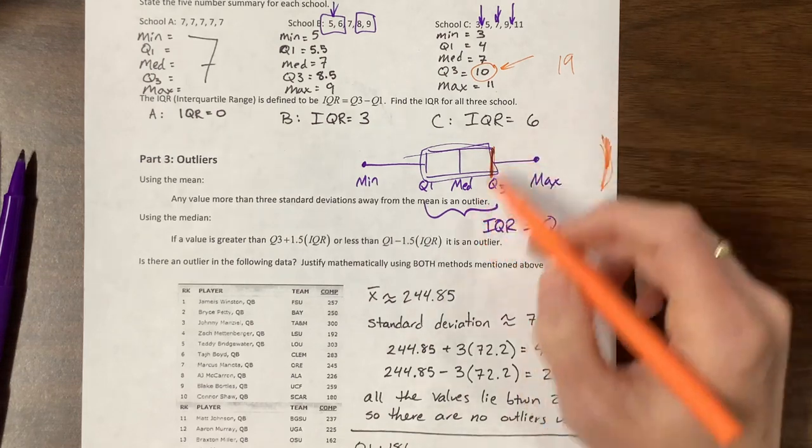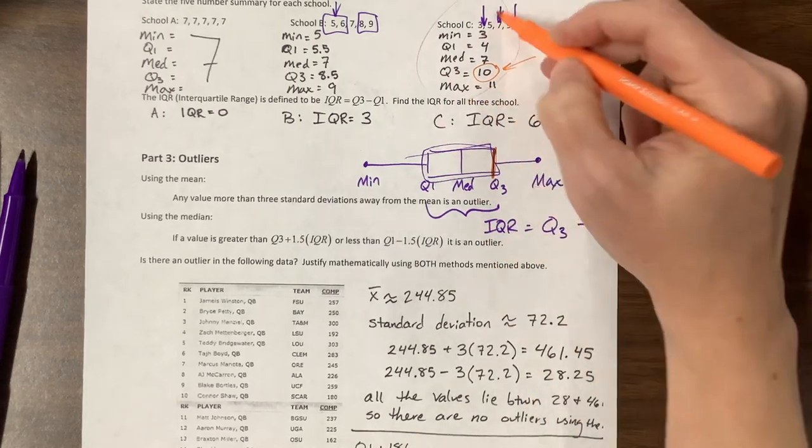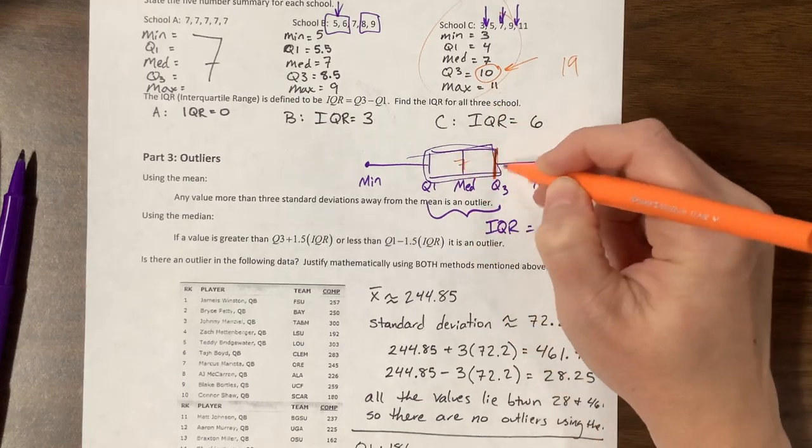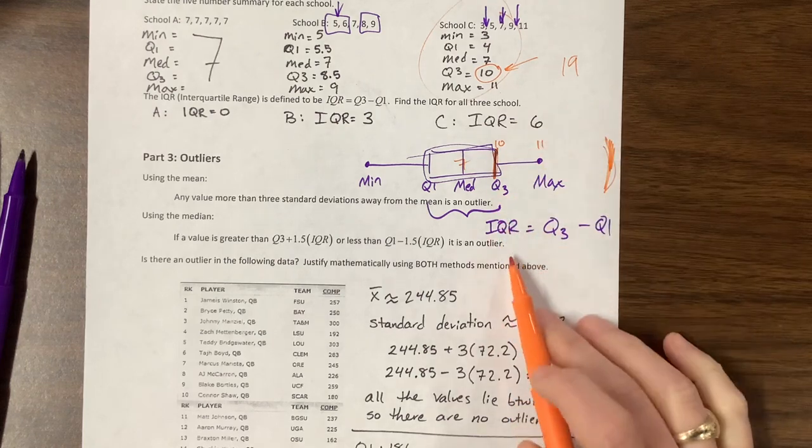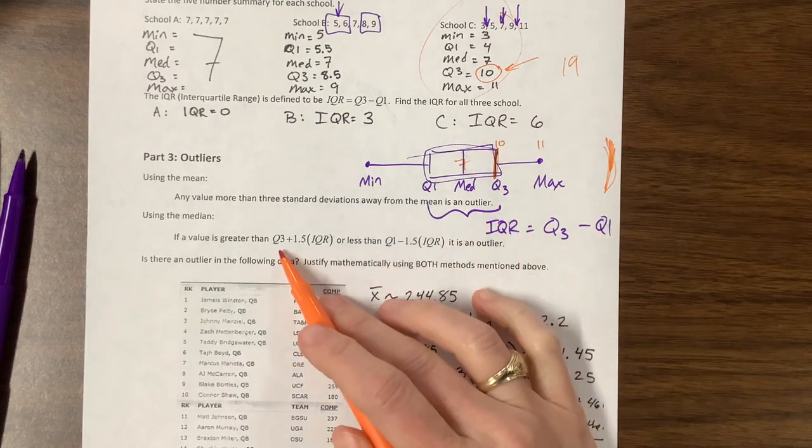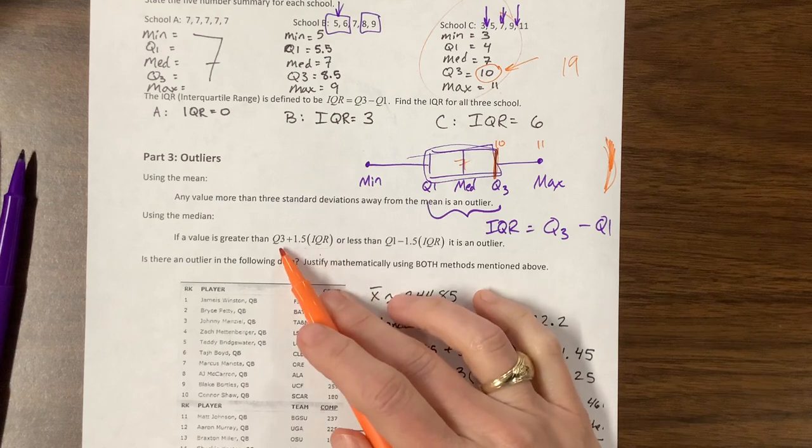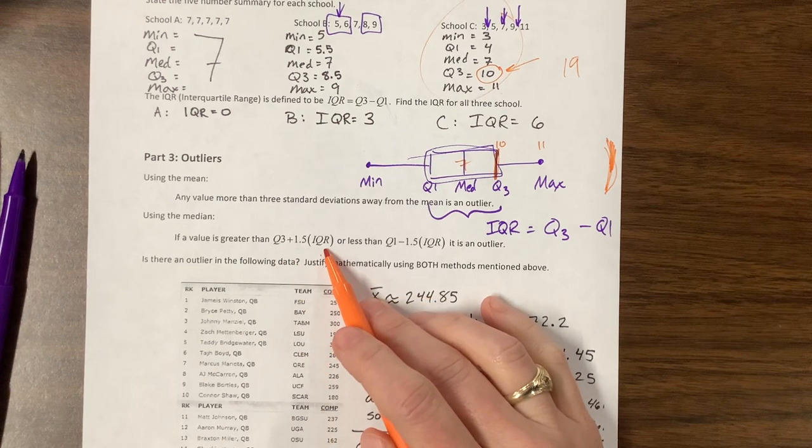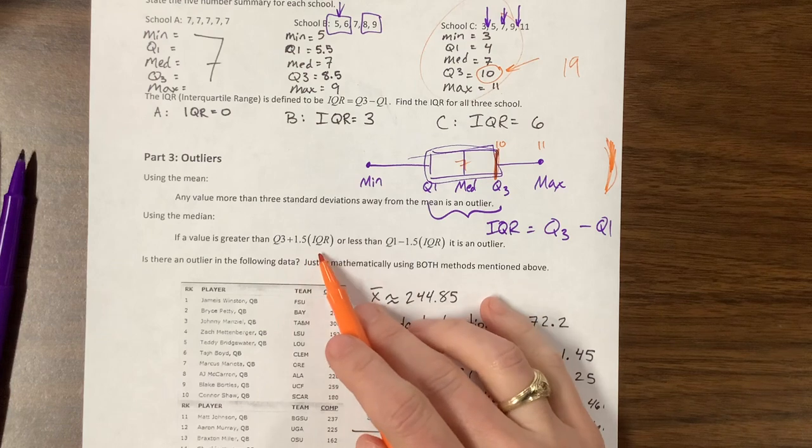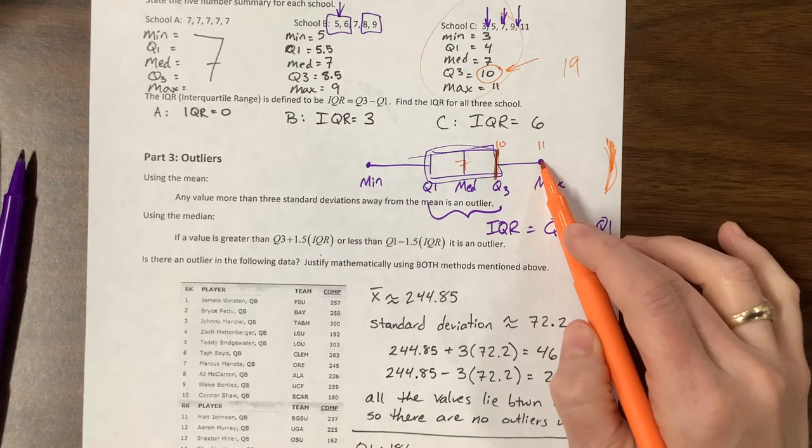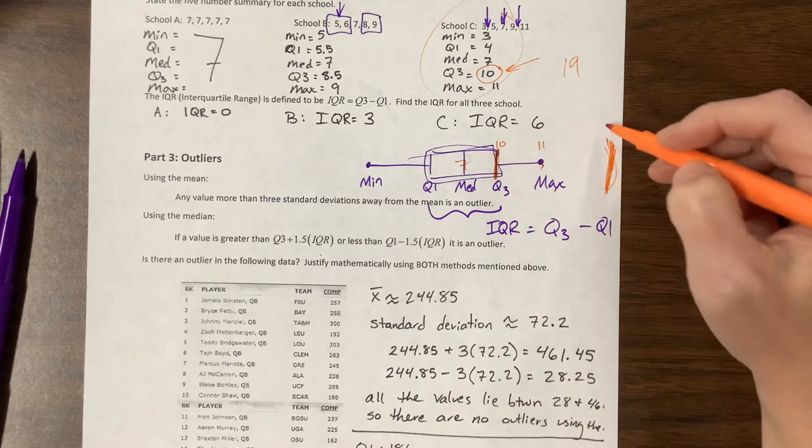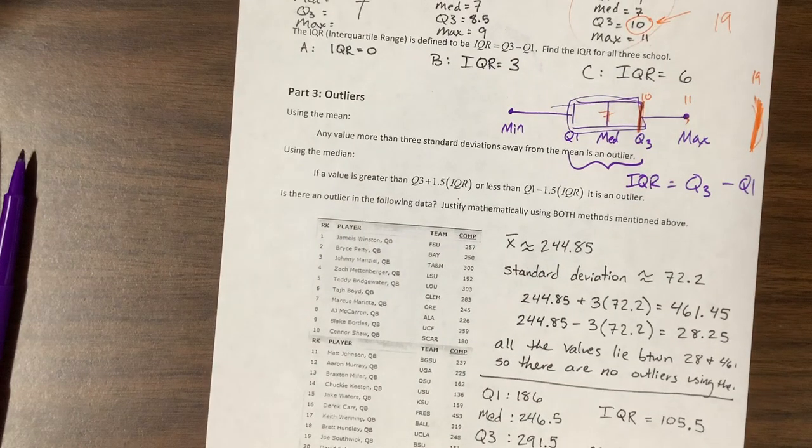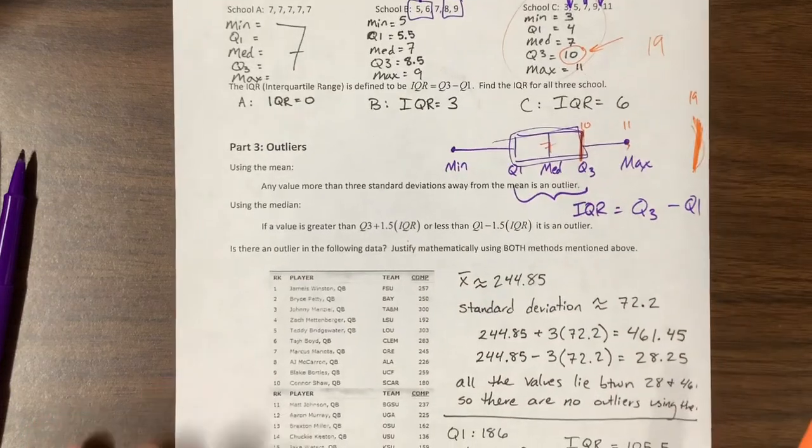So does that make sense? Here was using this set of data here, the median was at 7, the Q3 was at 10, I'm labeling this badly, the maximum was at 11. If I do the Q3 plus 1.5 times the IQR, we're now at 10 plus 9 is 19. Well the biggest value we had was 11. So this 11 is not an outlier, because only things that are bigger than 19 would be outliers. Okay, so that was one way to determine if there's an outlier.